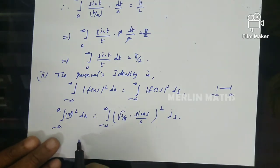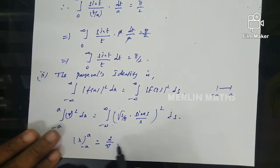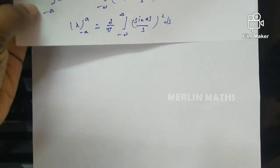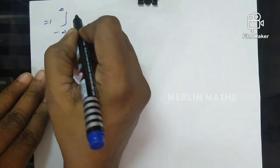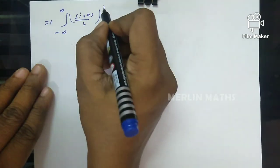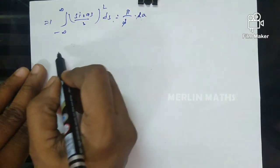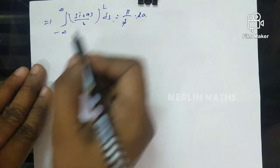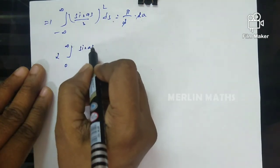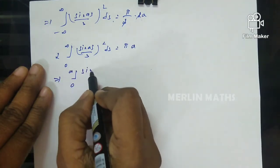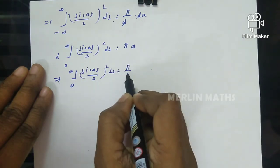On the left-hand side, integrating 1 dx from -a to +a gives 2a. Squaring the right-hand side gives (2/π) ∫₋∞^∞ (sin(as)/s)² ds. So 2a = (2/π) ∫₋∞^∞ (sin(as)/s)² ds. Rearranging: ∫₋∞^∞ (sin(as)/s)² ds = πa. Since (sin(as)/s)² is an even function, ∫₀^∞ (sin(as)/s)² ds = πa/2.